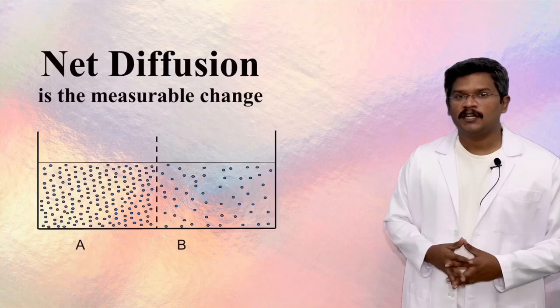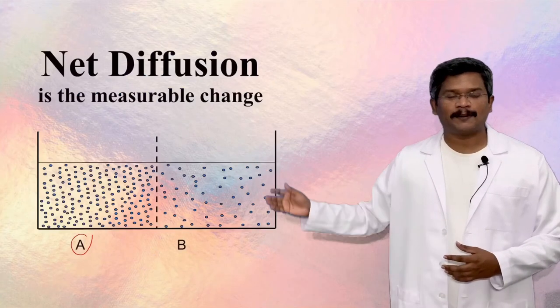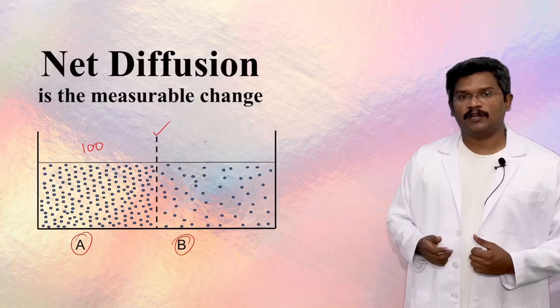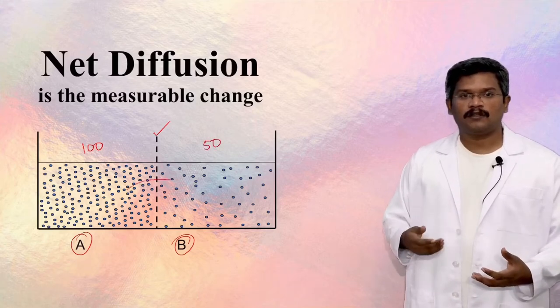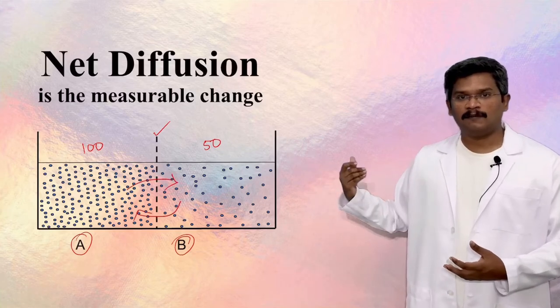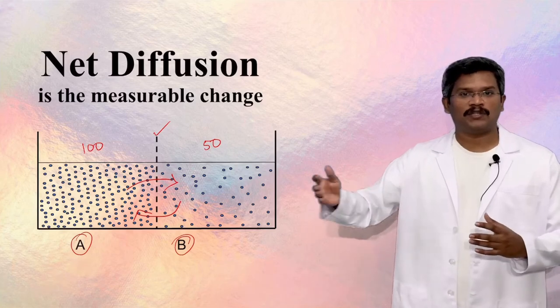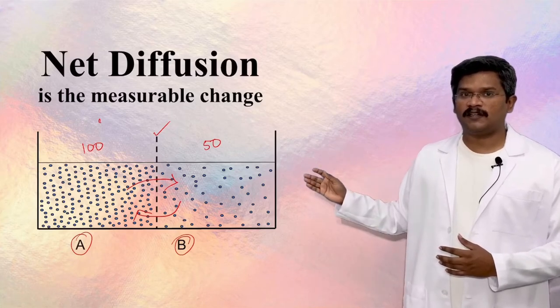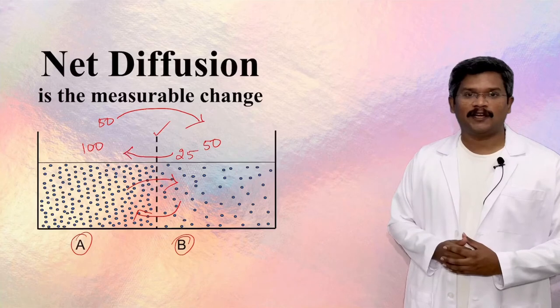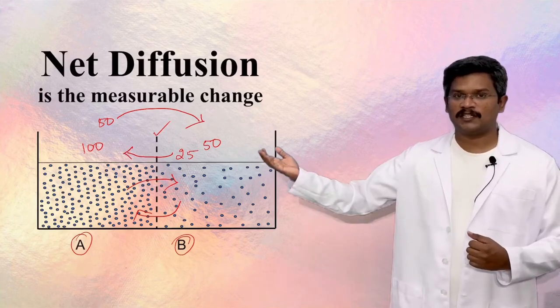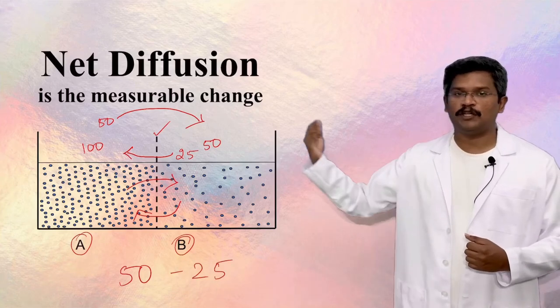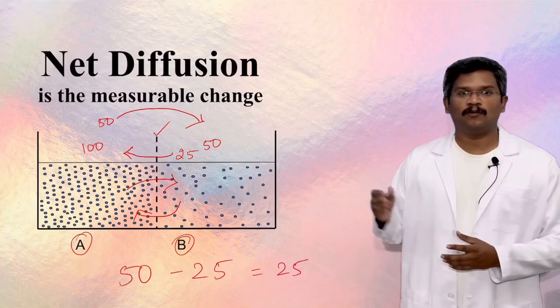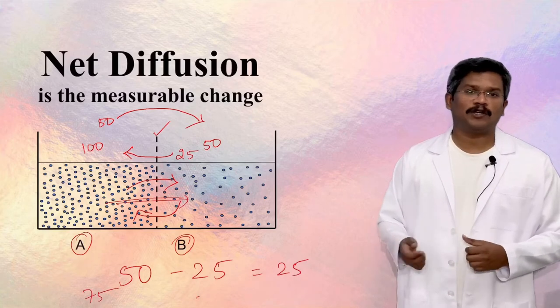Let me explain net diffusion with some numbers. This illustration shows two compartments, A and B, separated by a semipermeable membrane. Compartment A has high concentration—let's say 100 molecules—and compartment B has only 50 molecules. Due to diffusion, molecules move in both directions. Let's assume 50 percent of the molecules have moved to the other side: 50 molecules from A moved to B, and 25 molecules from B moved to A. Net diffusion refers to the difference between these movements: 50 minus 25 equals 25 molecules net diffusion from A to B, resulting in equilibrium with both compartments having 75 molecules.